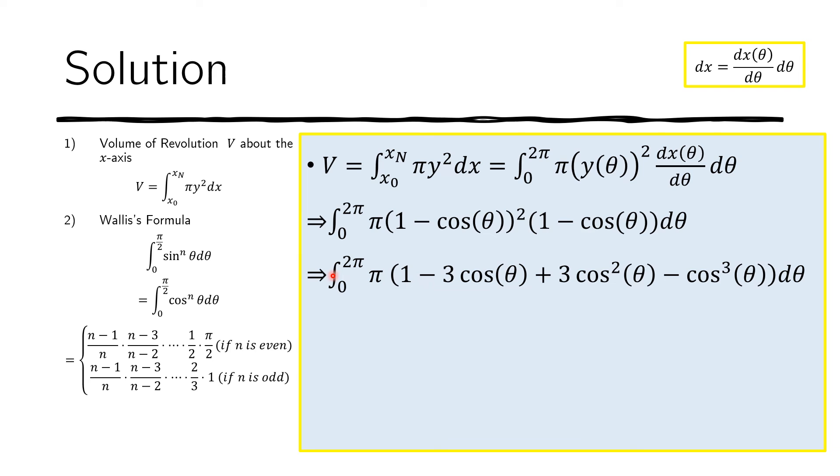And now we just distribute the integral because that's going to make it easier for us. The π is a constant, so it goes out. Now the integral of one is just θ. And if you do that from zero to 2π, it's just 2π minus zero. So 2π is here.